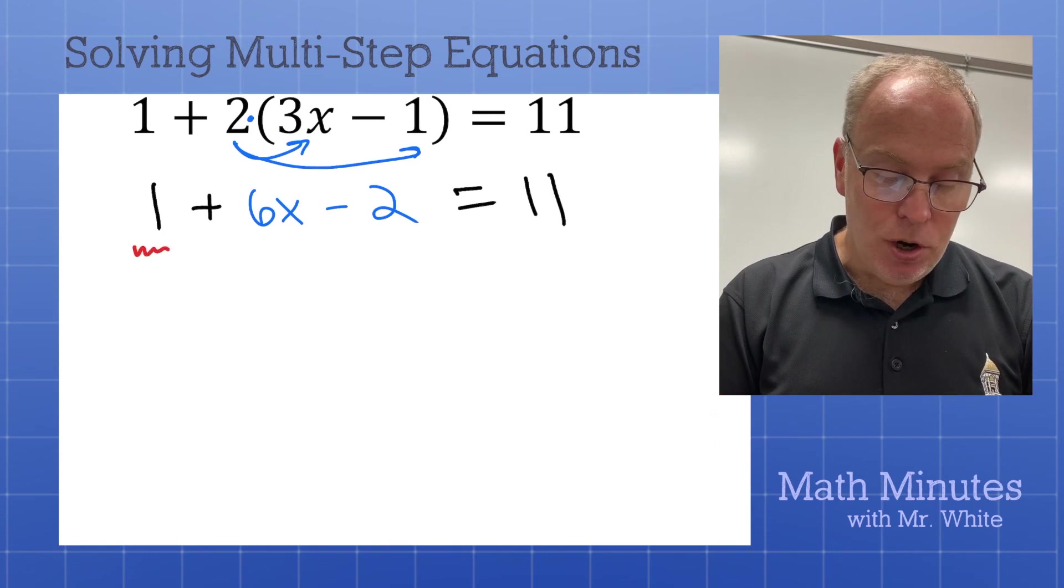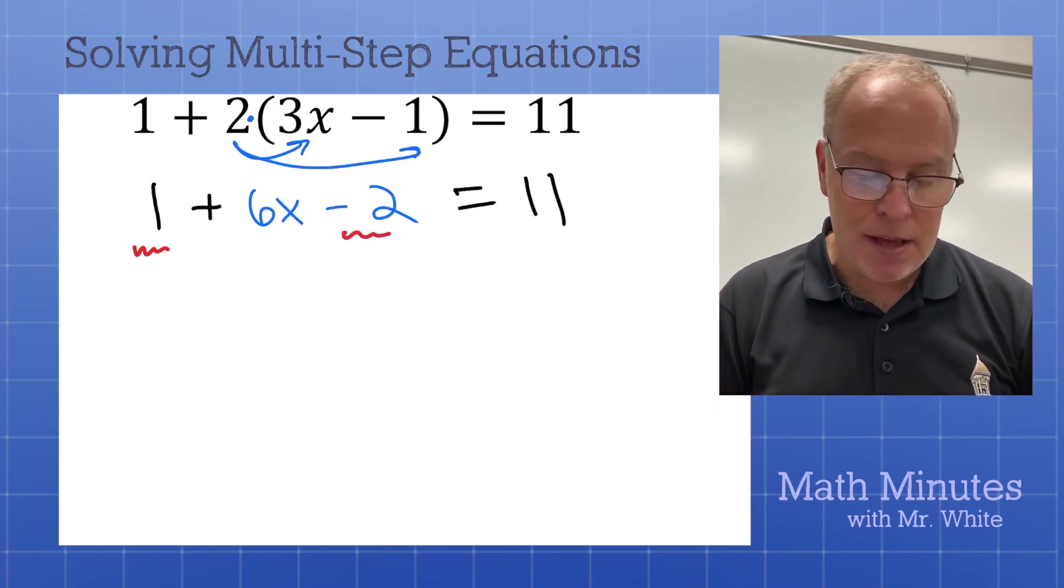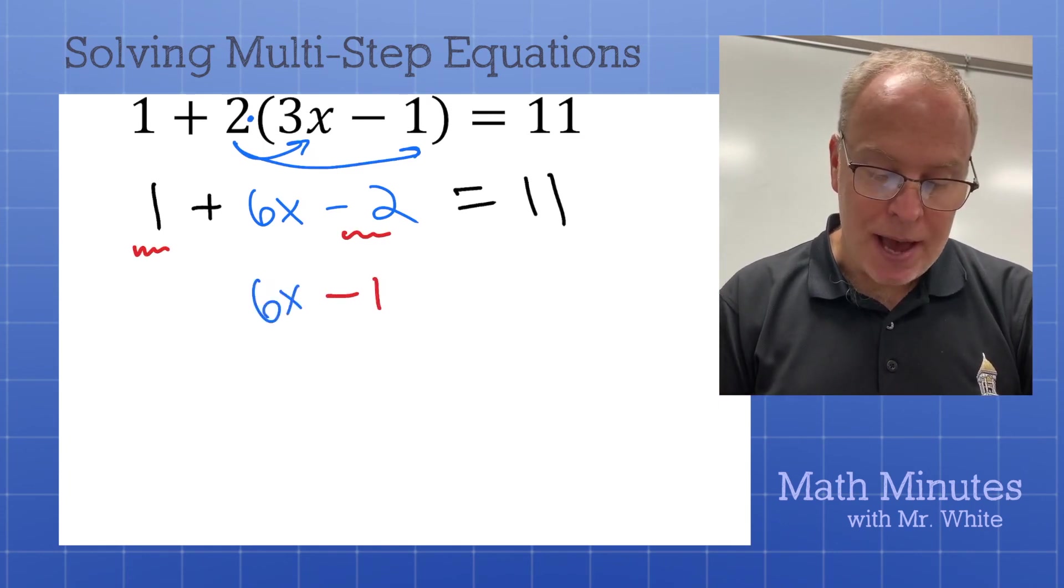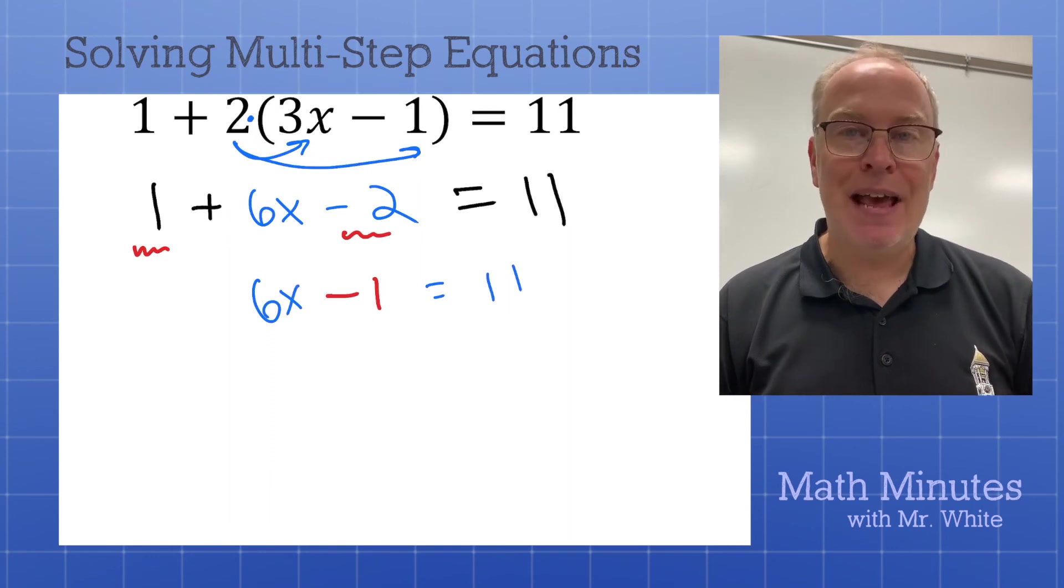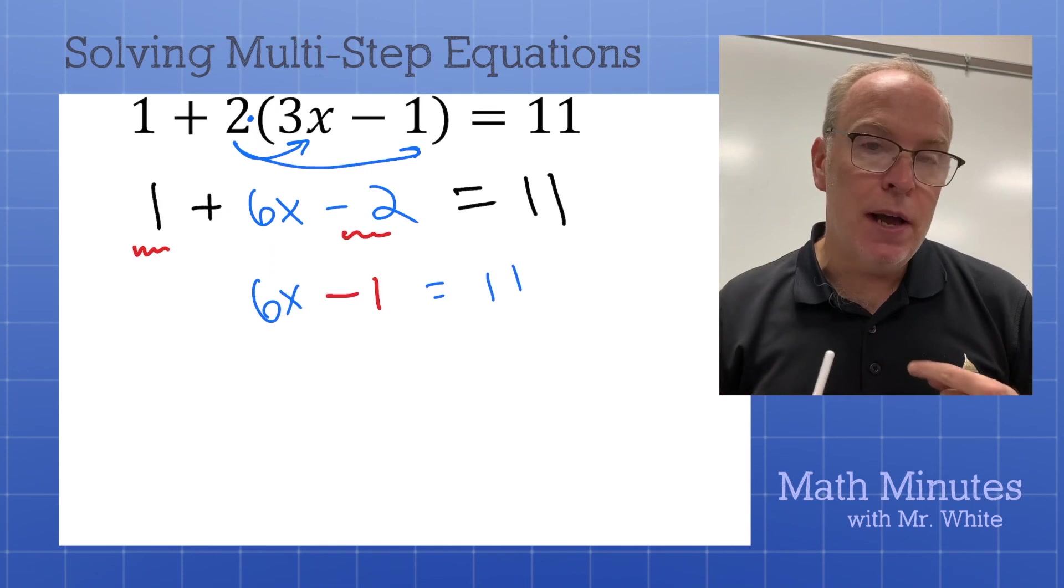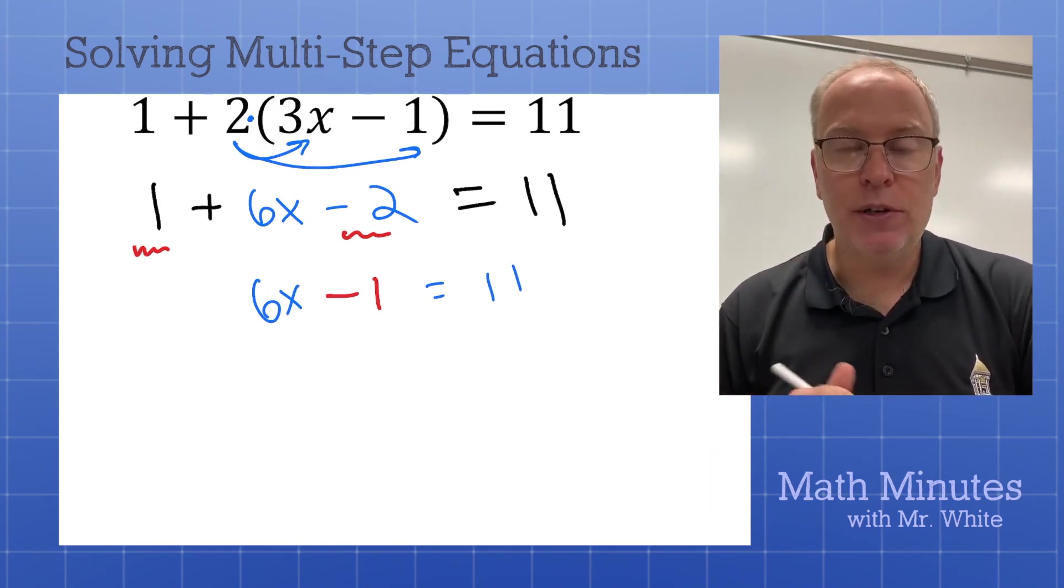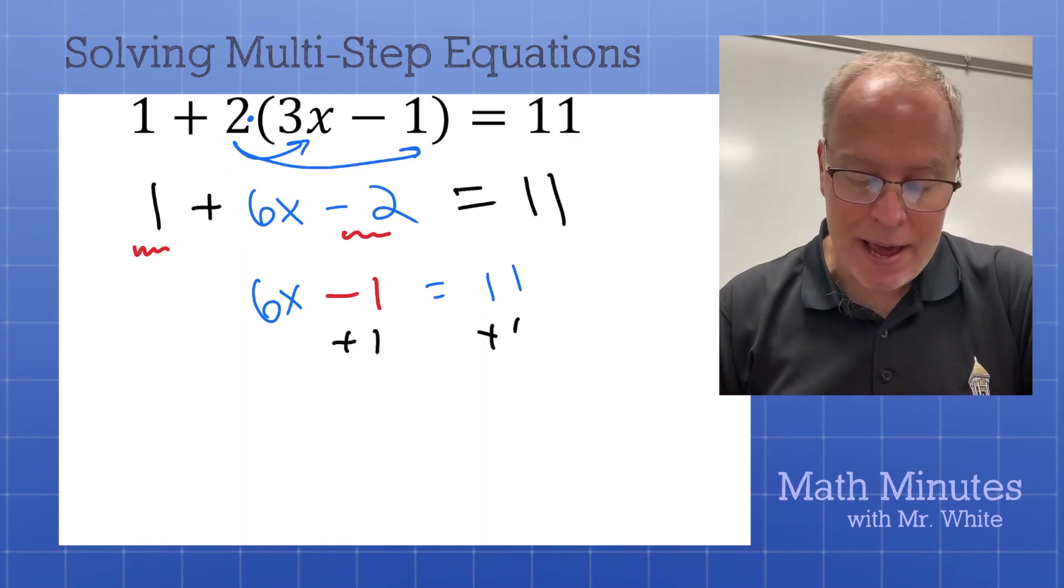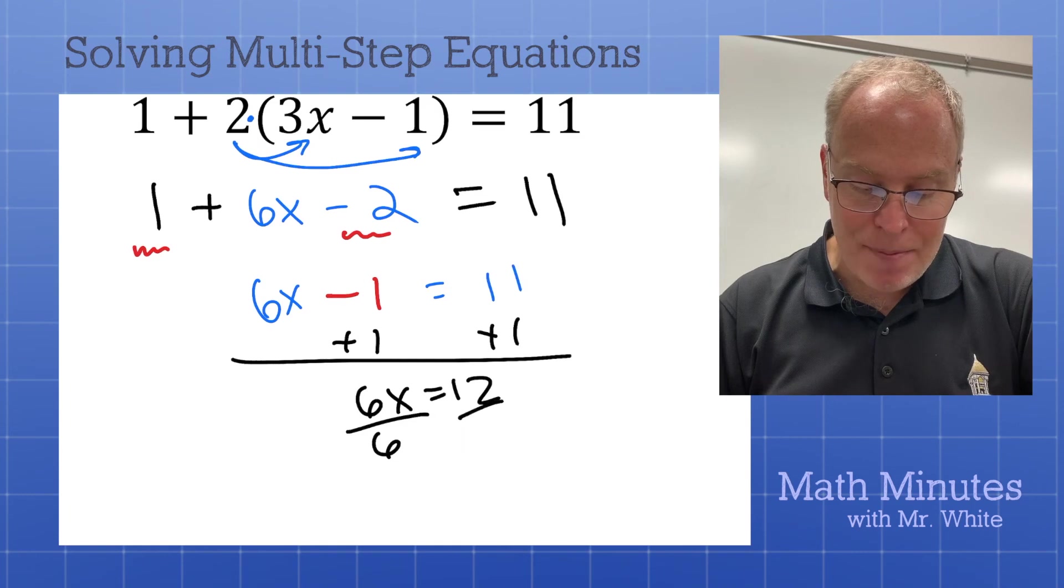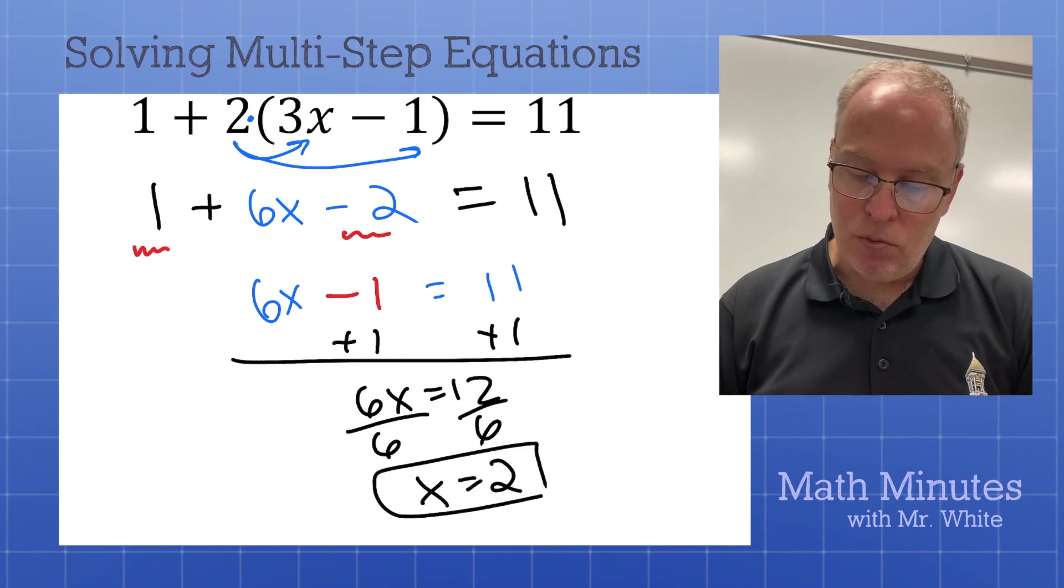We have like terms. Here's a constant and a constant. These are just a couple of integers. Let's add them together. That gives us negative 1. We also have this 6x just waiting for this next step. Our goal now is to get rid of the 6 and the negative 1 so that x is isolated. But remember, we do order of operations in reverse. We look to add or subtract. And we're going to add one. Add one. We get 6x equals 12. Then we divide by 6 at the very end. x equals 2. x equals 2.